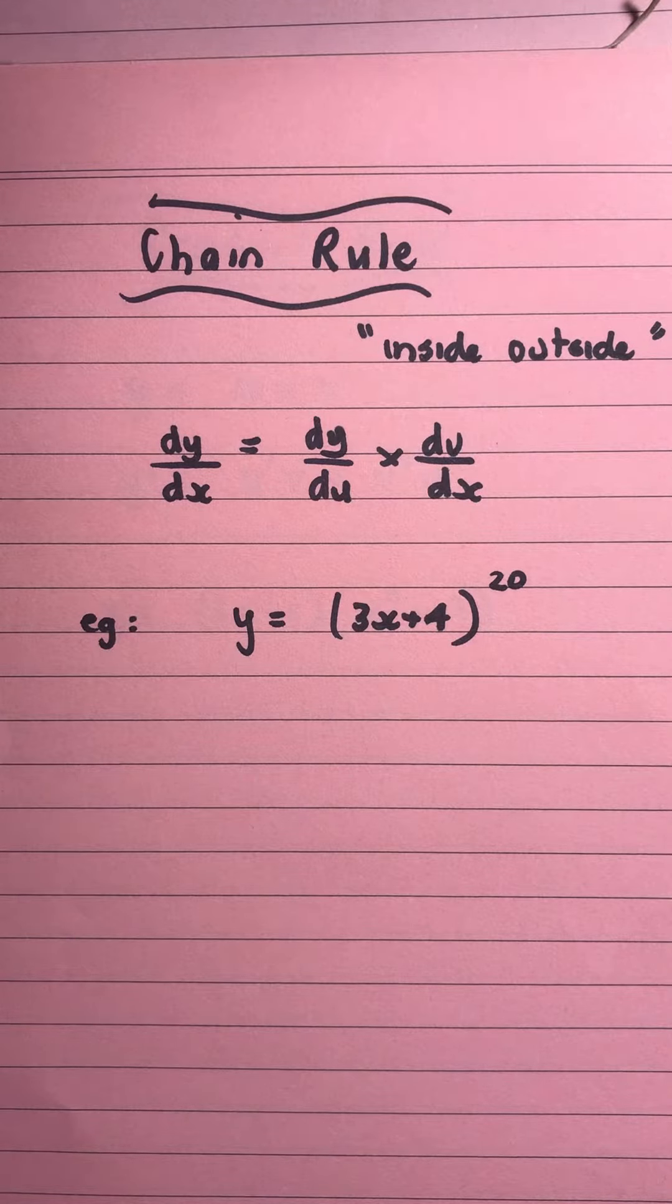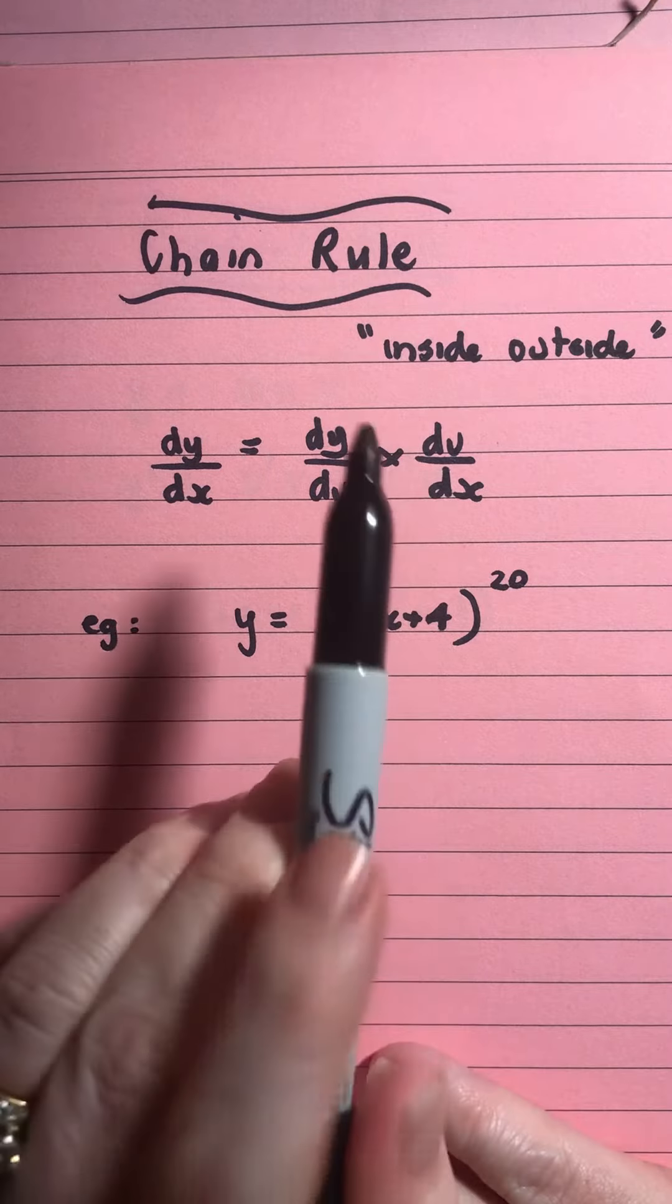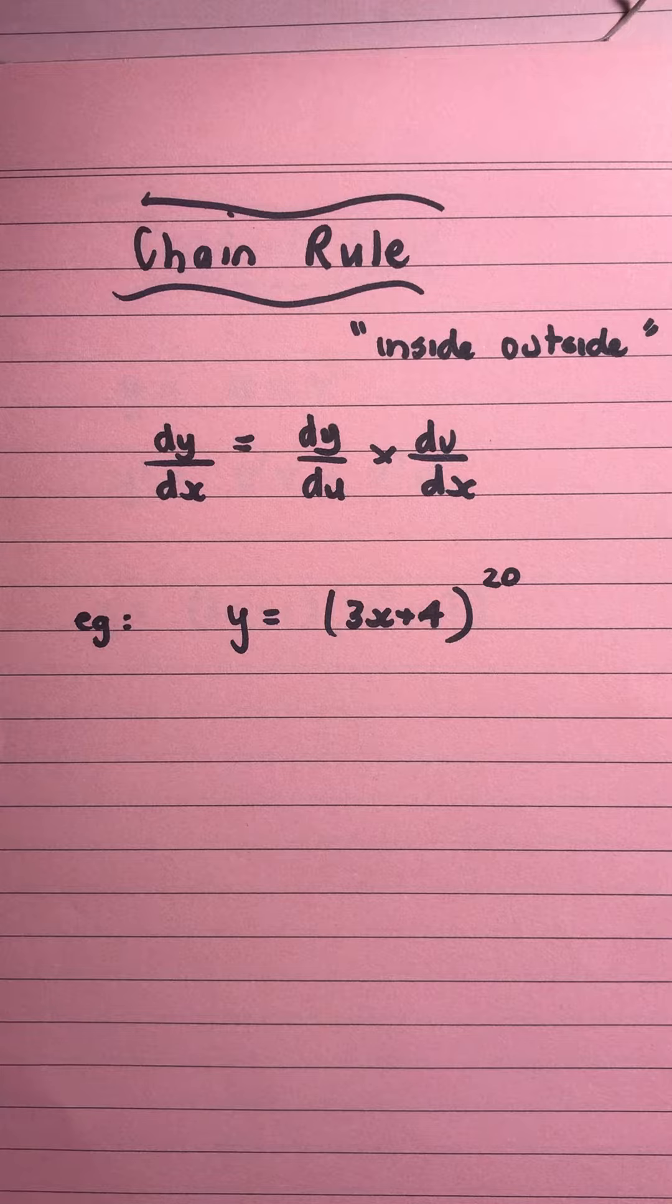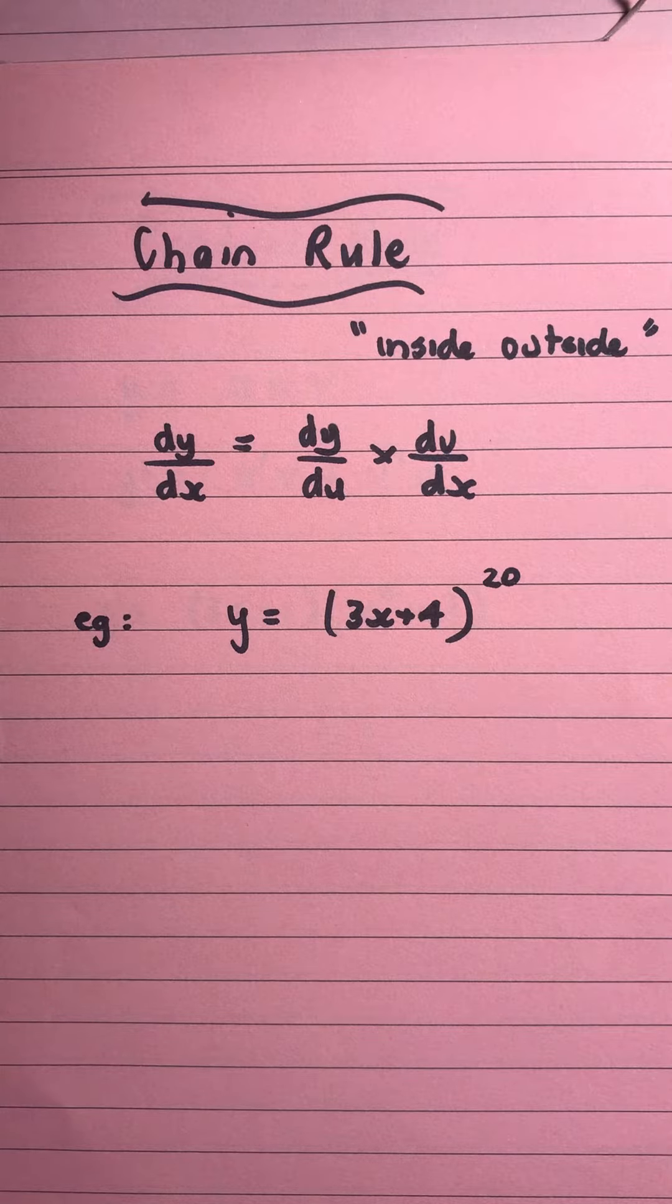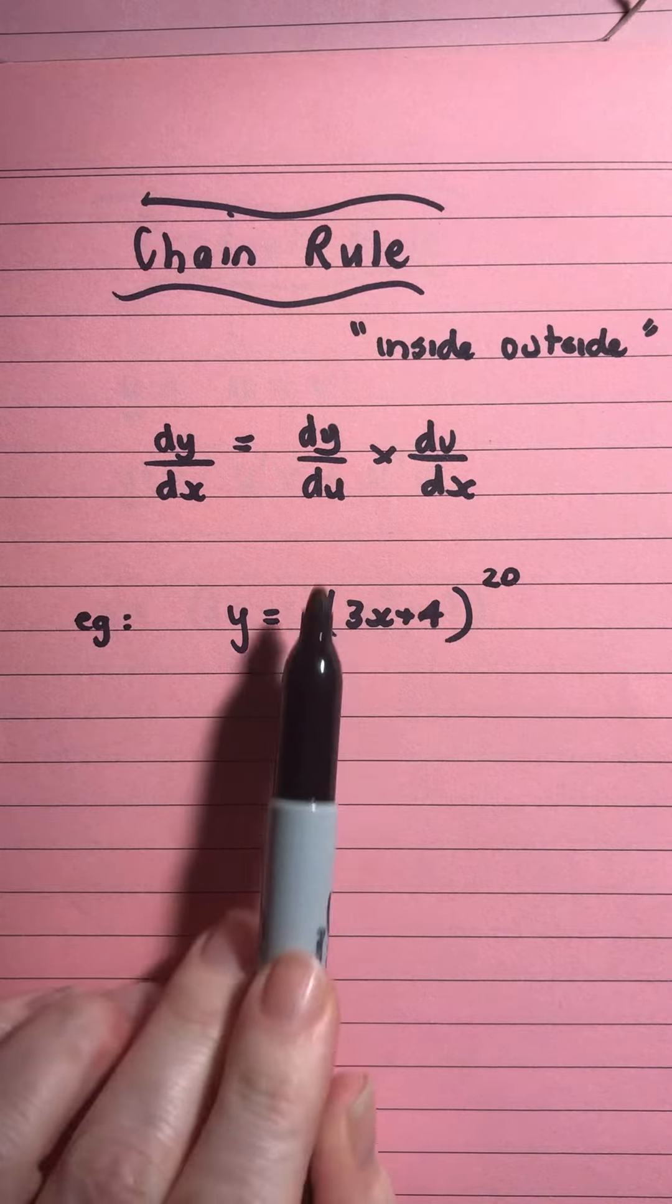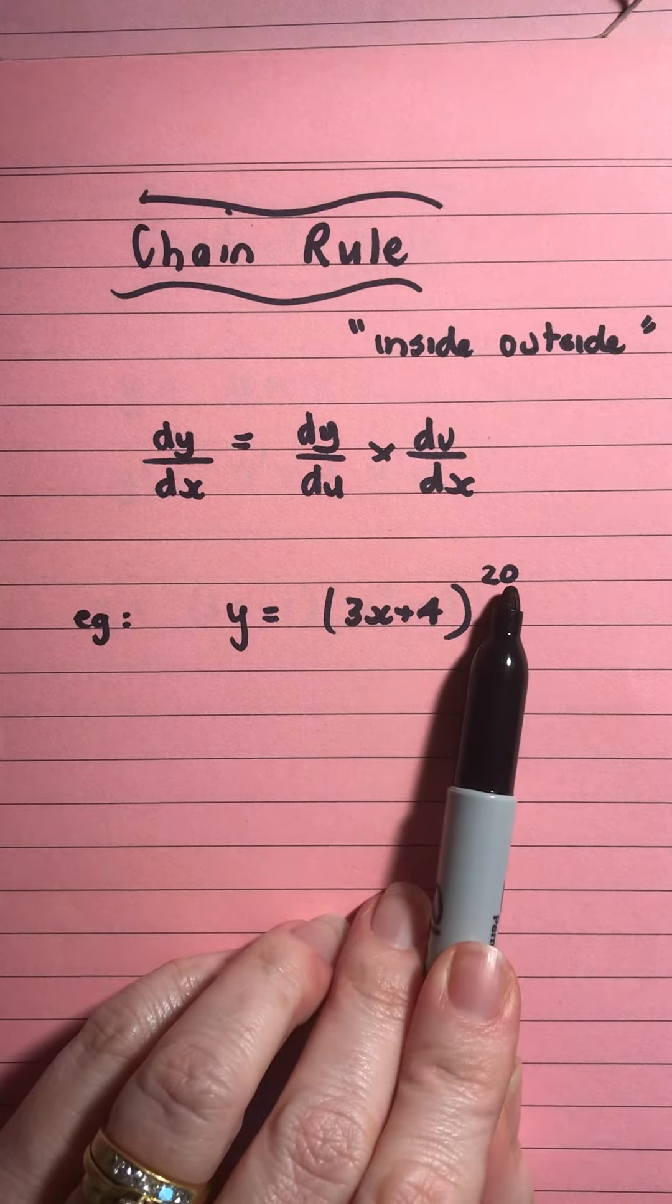Okay, having a look at the chain rule to find a derivative in this video. Now, I like to call this the inside-outside rule because it's like you're finding the derivative of the outside and you're multiplying it by the derivative of the inside. So, chain rule always applies to when you have brackets and you're raising to a power.